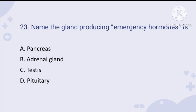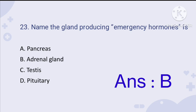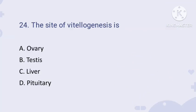Question number twenty-three: name the gland producing emergency hormones. Emergency hormones are also called fight or flight hormones — they are mainly catecholamines produced by the adrenal gland. Therefore, answer is B.